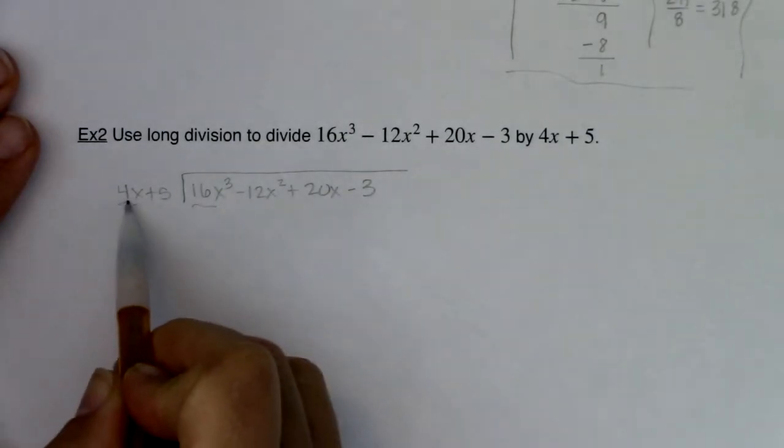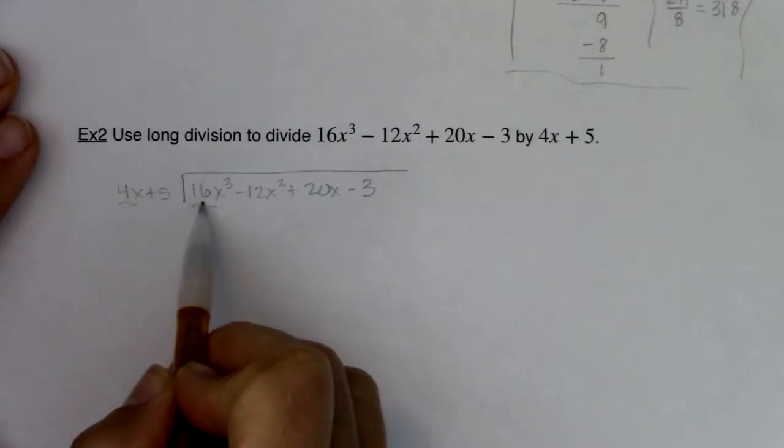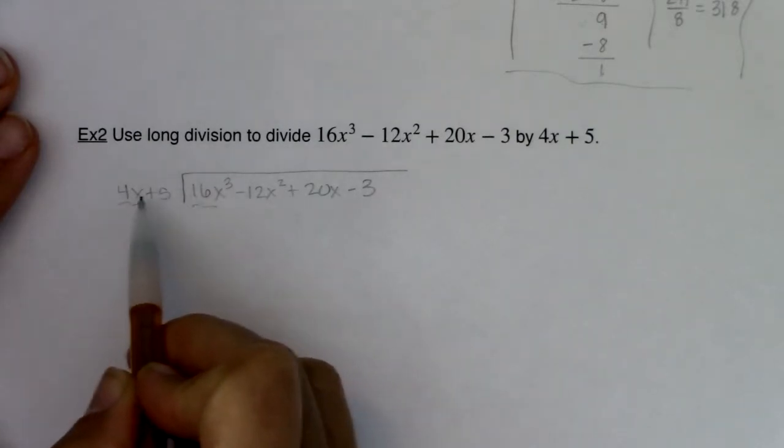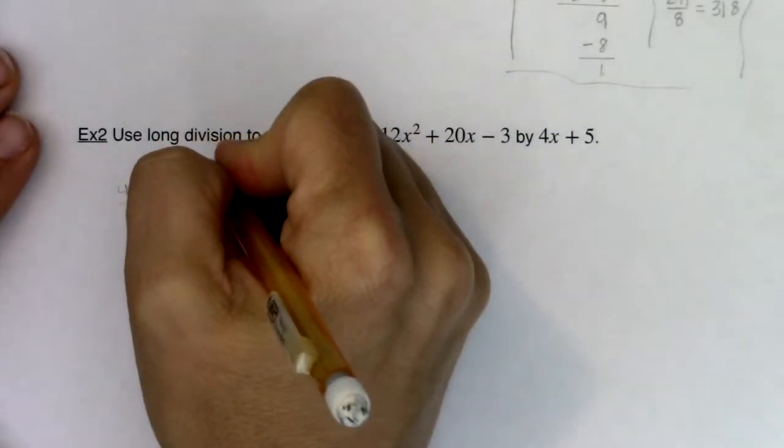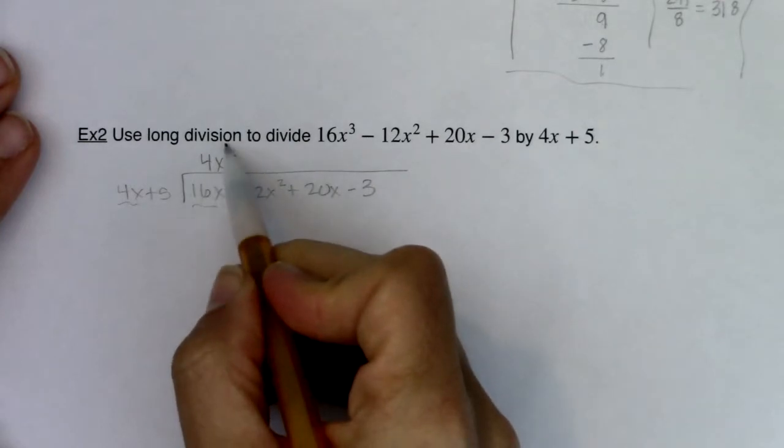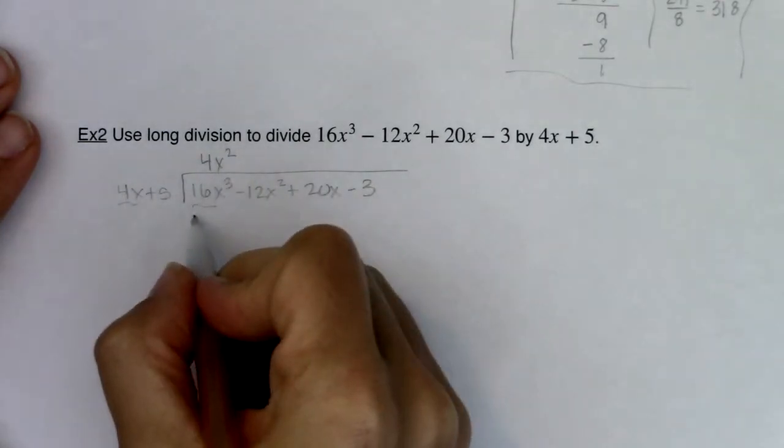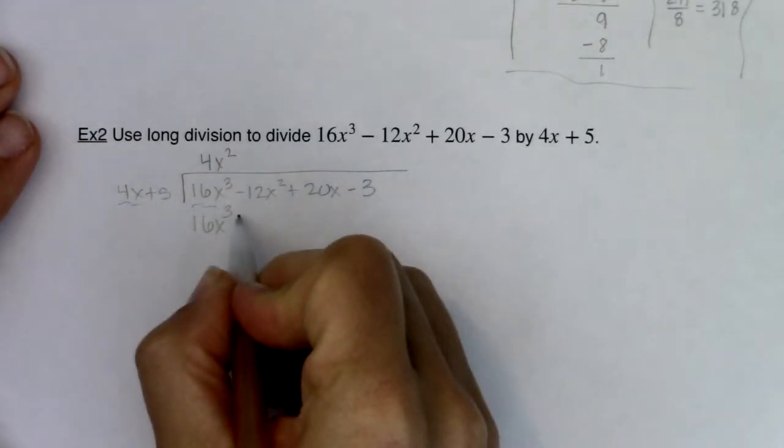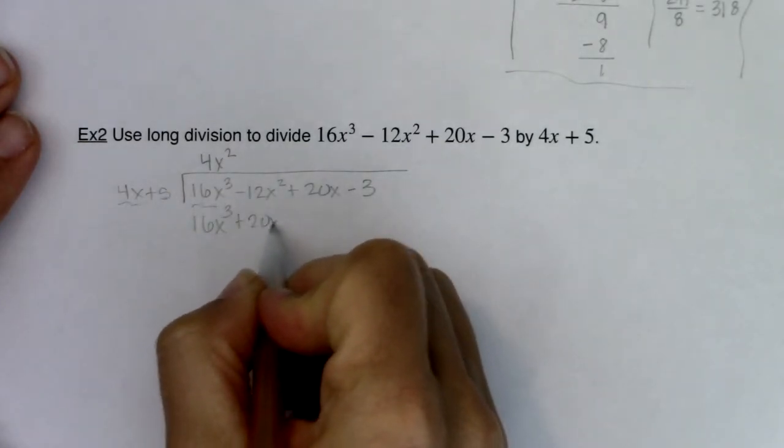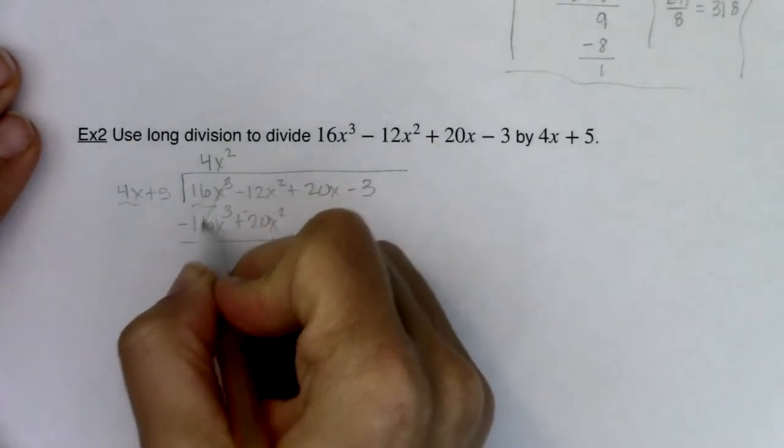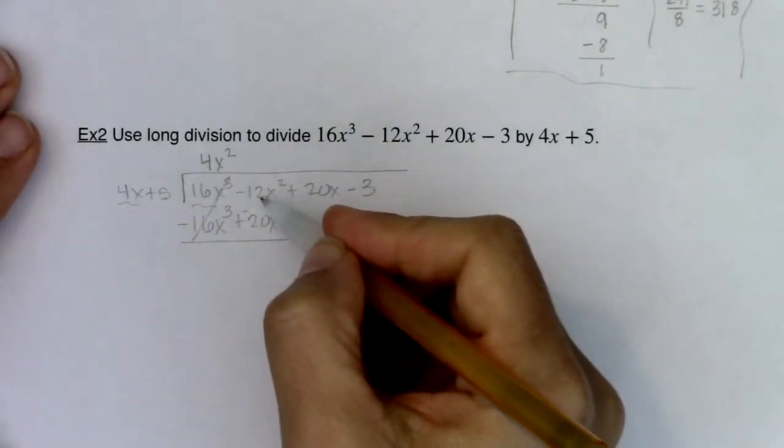What do I need to multiply 4x by to get up to 16x cubed? Well, the 4 needs to multiply by 4 and the x needs to get multiplied by x squared, so I'm looking at 4x squared. I'm going to multiply this monomial to this binomial. We're going to get 16x cubed, 5 times 4x squared is 20x squared. I'm going to change the signs on those because I'm going to subtract that binomial. These cancel by design.